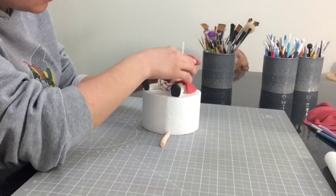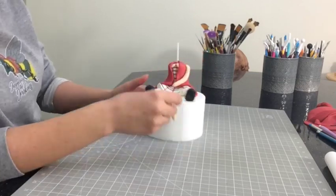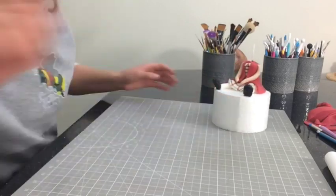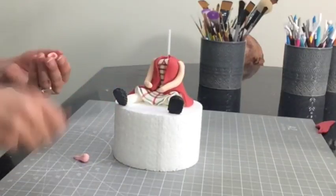Then when I've placed her arms on I add two red pieces of fondant over them for her sleeves. I do also scratch the pink fondant to make her gloves look fluffy.